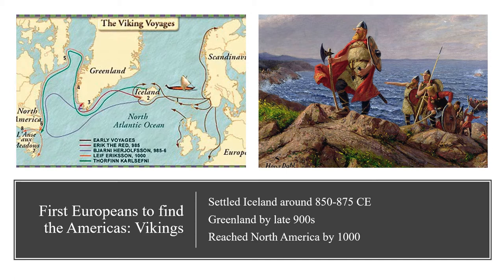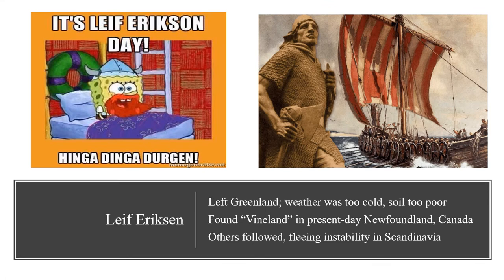Who were the first Europeans to arrive in the Americas? The first confirmed European arrivals to the Americas came not in the late 1400s as you might think, but much earlier, around the year 1000 of the Common Era. These first Europeans to come to America were the Vikings — seafaring raiders from Scandinavia, skilled sailors and shipbuilders — settling Iceland between 850 and 875 CE, and Greenland in the late 900s, although scholars debate whether Greenland should be considered part of Europe or North America. The Vikings reached the mainland of North America, what is now Newfoundland, around the year 1000 CE.